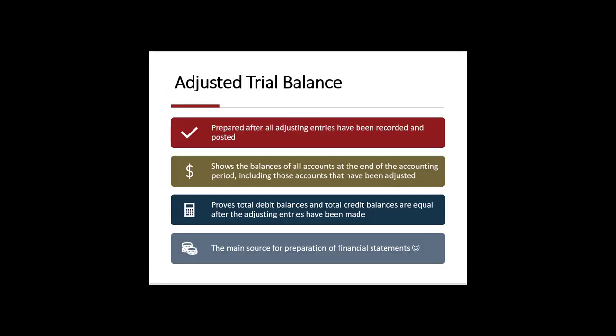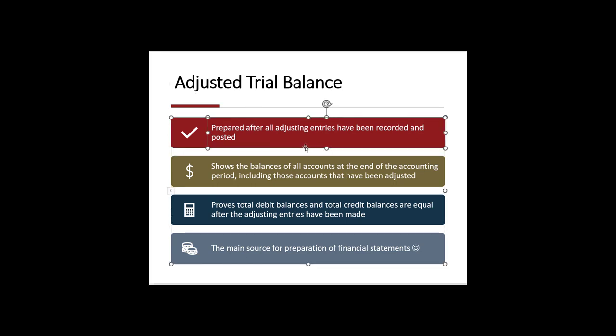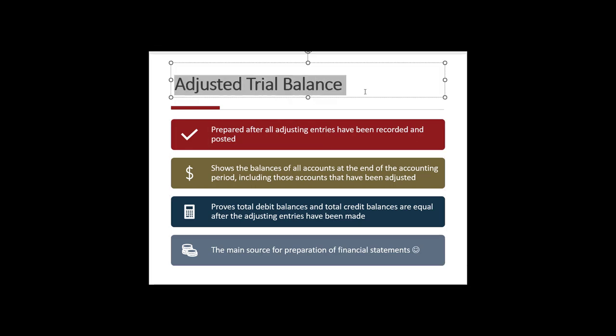As you saw before, the trial balance is when we had all of the general journal entries recorded. The adjusted trial balance, however, is what's prepared after all of those adjusting journal entries from learning objectives two and three have been recorded. Then you post all of those to the trial balance, and it's referred to as the adjusted trial balance.